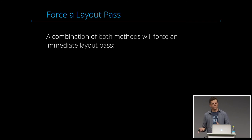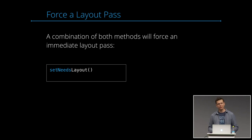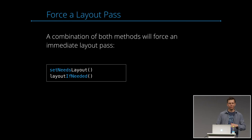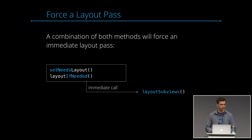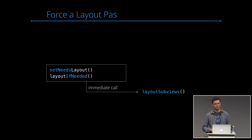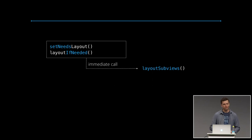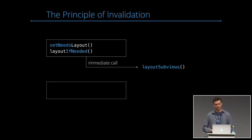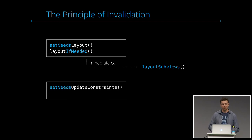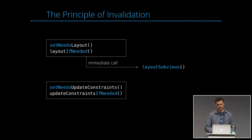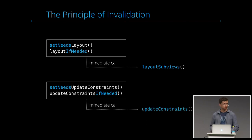A combination of setNeedsLayout followed by layoutIfNeeded forces an immediate layout pass. This is a very common pattern in UIKit — I call it the principle of invalidation. Similarly, there's the pair setNeedsUpdateConstraints and updateConstraintsIfNeeded, which results in an immediate call of updateConstraints.